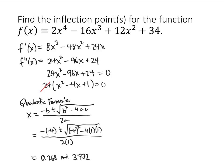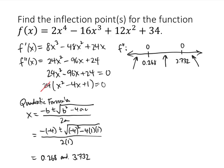So those are places where my second derivative might change sign — from positive to negative or from negative to positive. The way that we tell whether or not these are really inflection points is similar to the first derivative test. We're going to draw a number line and place our two potential values, 0.268 and 3.732, on it. Then we pick a number less than 0.268, a number between 0.268 and 3.732, and a number greater than 3.732, and plug those values into f double prime to see whether it actually changes sign.